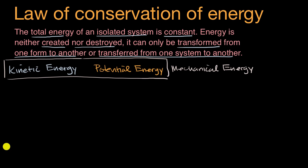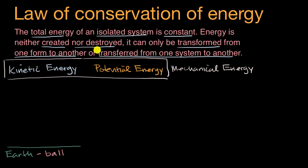Let's start with a system that contains all of the Earth and a ball — let's call this the Earth-ball system. When you're dealing with the law of conservation of energy, it's important to specify your system. We're going to assume it's an isolated system, not interacting much with outside systems like the sun. I've drawn the Earth here, and then the ball held above the Earth, just like that.